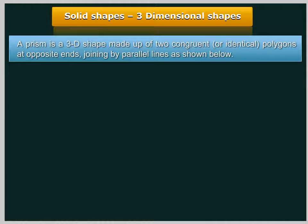A prism is a 3D shape made up of two congruent or identical polygons at opposite ends, joining by parallel lines as shown here.